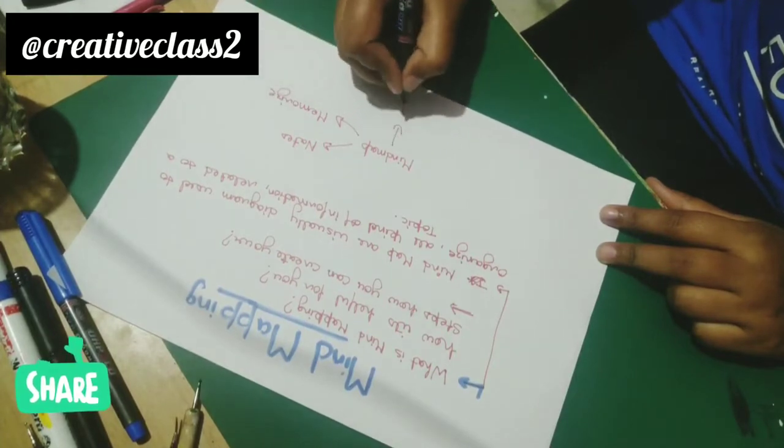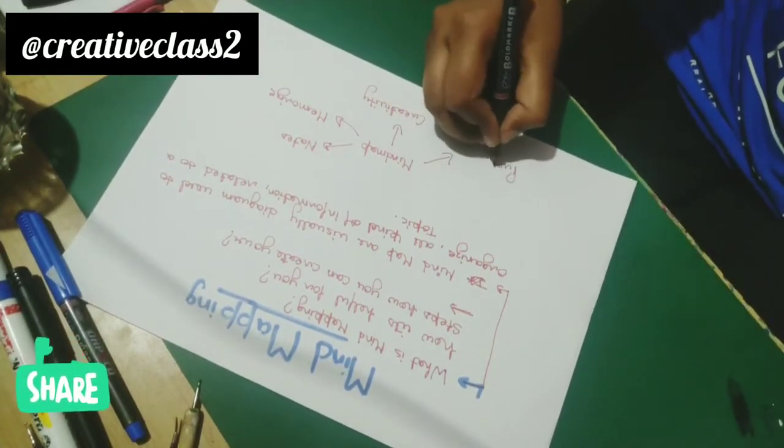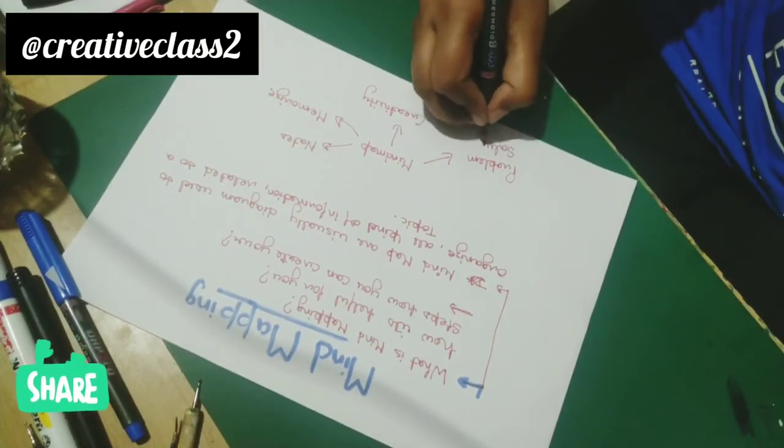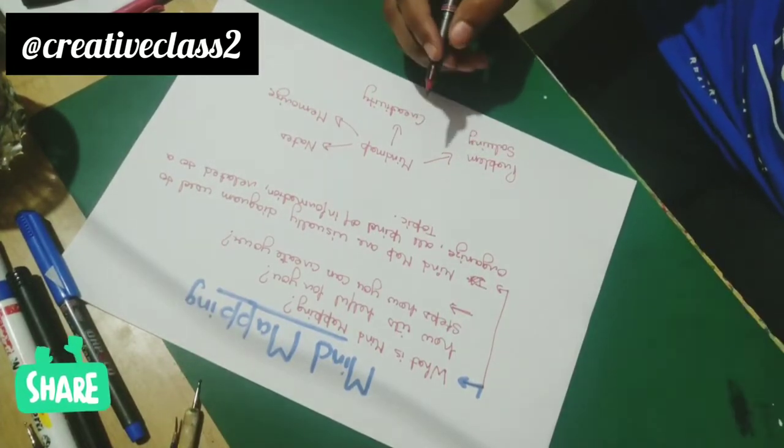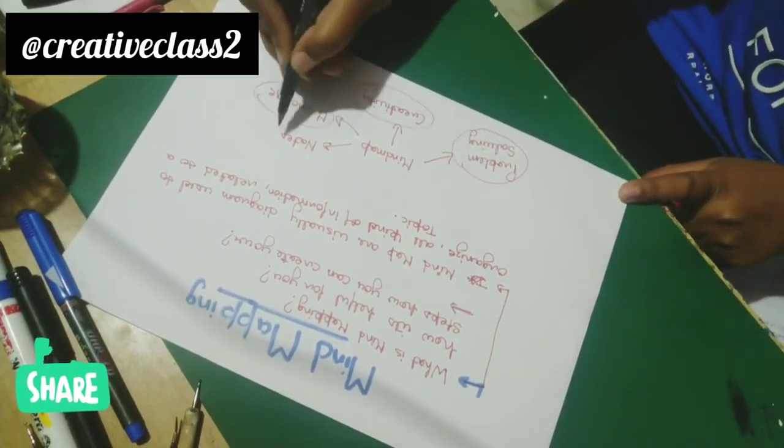Now let's start. Write down your topic in the center or draw image related to it. Now draw main branches from the center which further can divide into sub-branches. Now further we see the example.